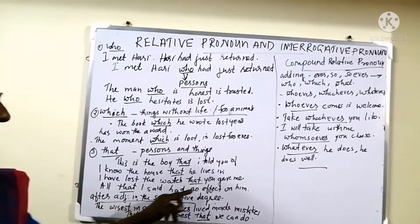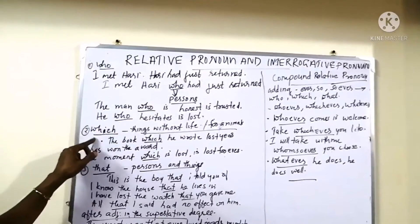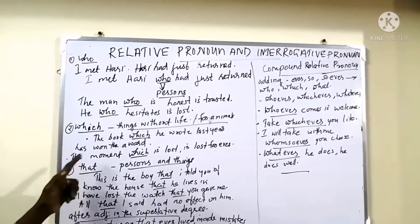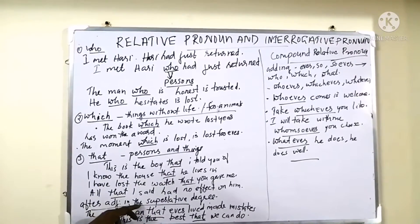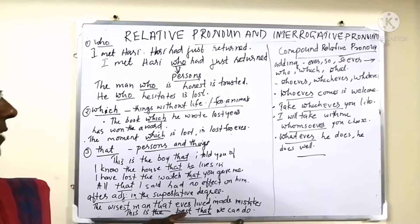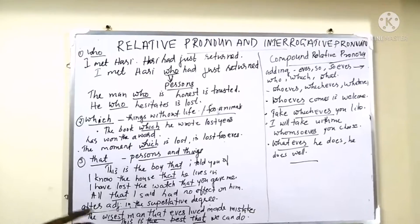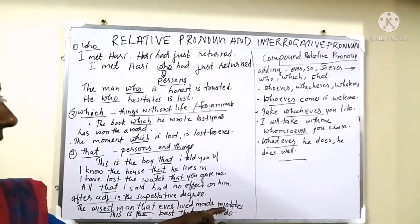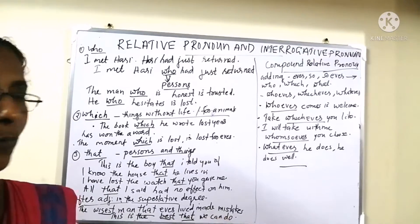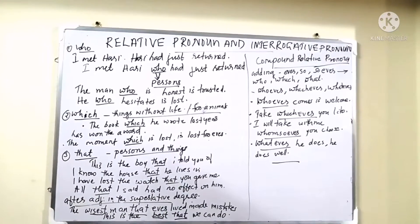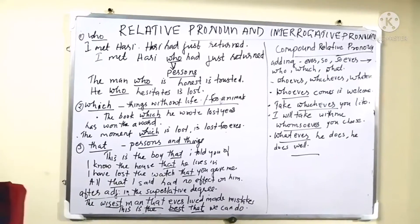All that I said had no effect on him. So now we have studied about the three relative pronouns: 'who' for persons, 'which' for things without life and for animals, and 'that' for persons and things. Also, after adjectives in the superlative degree, we use the relative pronoun 'that.' For example: The wisest man that ever lived made mistakes. This is the best that we can do.